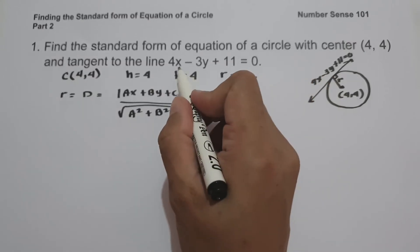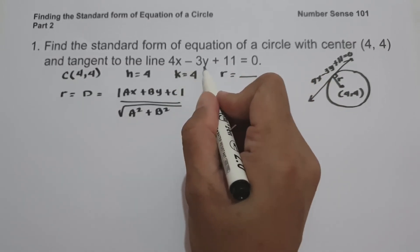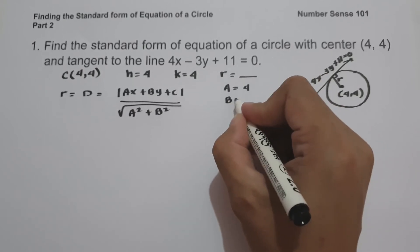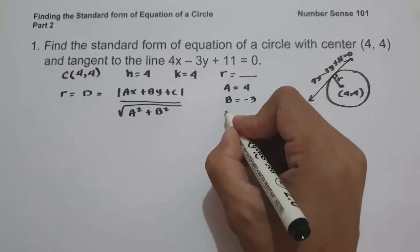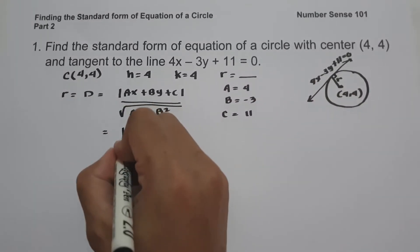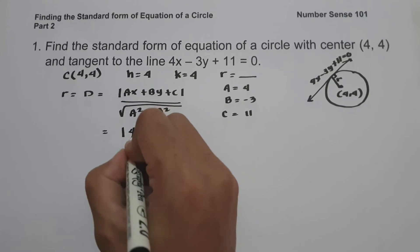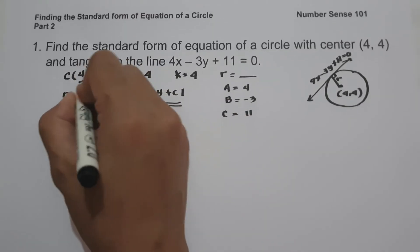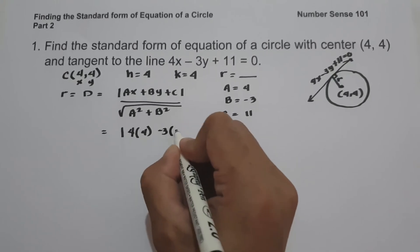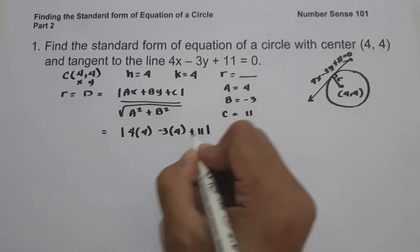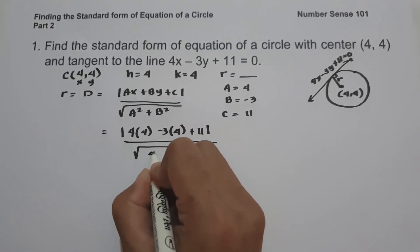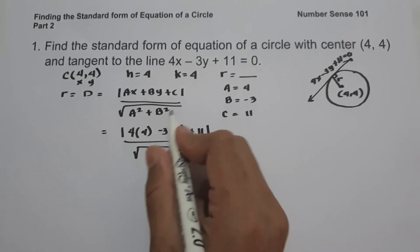Since our given line is 4x minus 3y plus 11, the value of a is 4, b is negative 3, and c is 11. So we have the absolute value of a times x — that is 4 times 4 — plus b times y — that is negative 3 times 4 — plus 11, all over square root of a squared plus b squared.